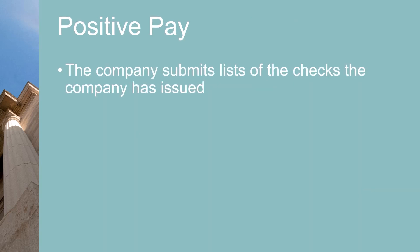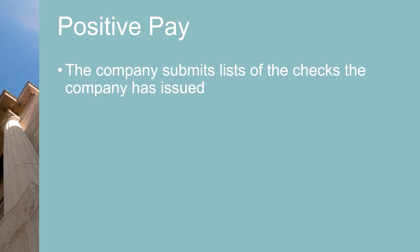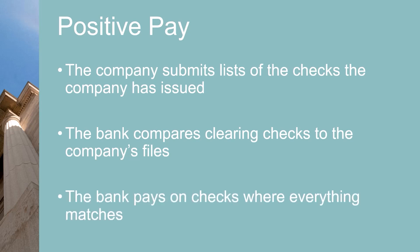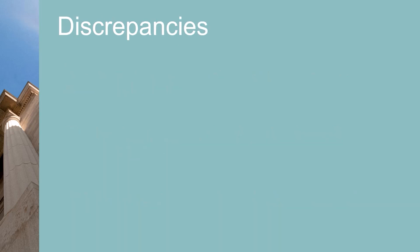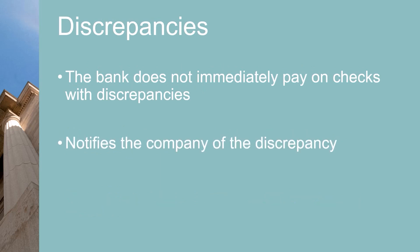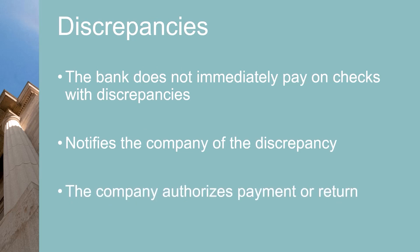In Positive Pay, a company submits lists of the checks the company has issued. These lists include items like check numbers, amounts, dates, payees, account numbers, and issue dates. As these checks are presented to the bank for payment, the bank makes sure the details on the check match the details in the file from the company. The bank pays the checks for which all items match. For any checks with discrepancies, the bank notifies the company, and then the company instructs the bank either to pay the checks or return them unpaid.